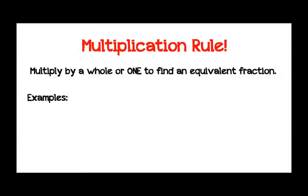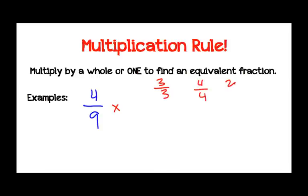The first way that you can find equivalent fractions is by using the multiplication rule. All that you're going to do is multiply a whole or one to find an equivalent fraction. So let's start with an example. Let's say that we had the fraction 4-ninths and we wanted to use the multiplication rule to find an equivalent fraction. All that we're going to do is multiply the numerator and the denominator by a whole. It could be any whole — you could pick 3 out of 3, 4 out of 4, 20 out of 20, or 1,000 out of 1,000. As long as you multiply both the numerator and the denominator by the same numbers, you're going to find a new equivalent fraction.